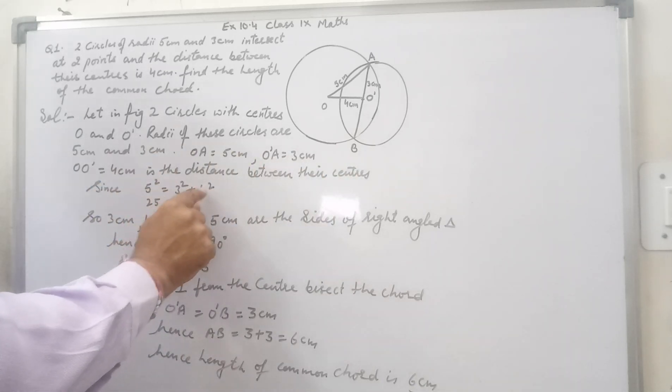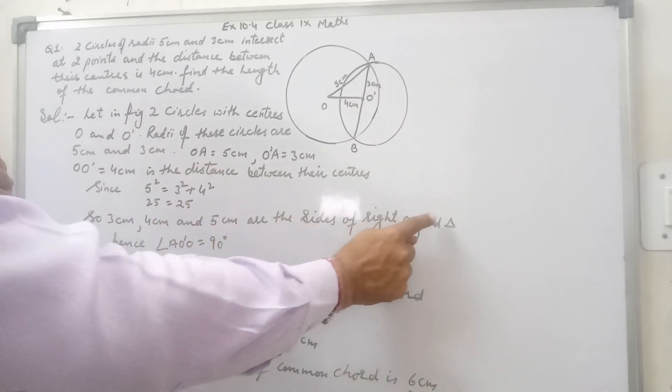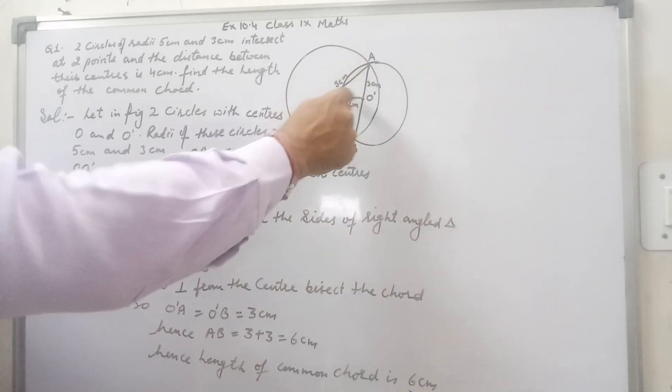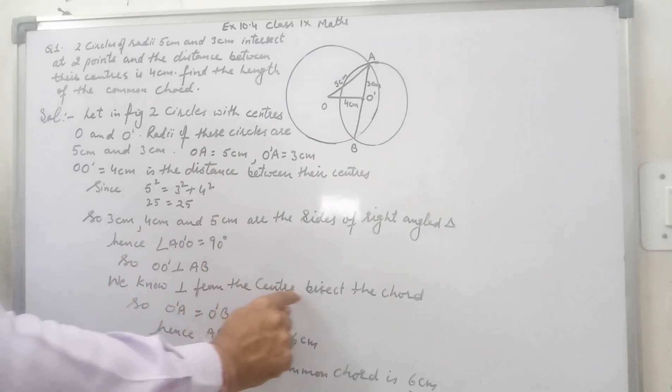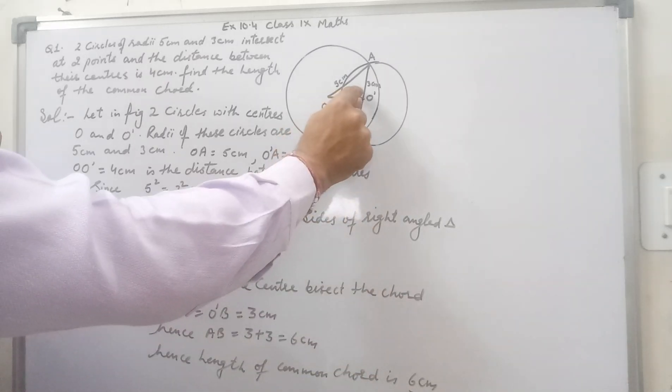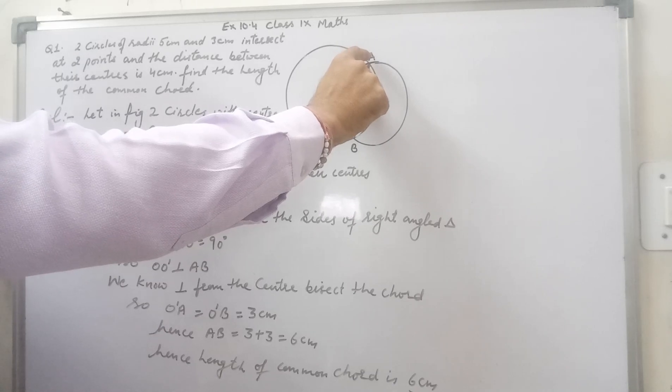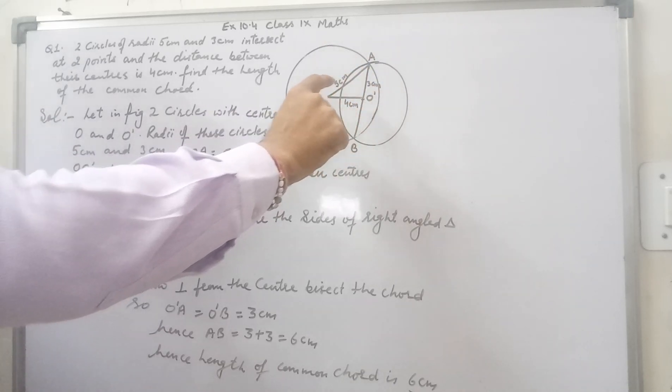Since 5 square is equal to 3 square plus 4 square that is 25 is equal to 25 hence 3, 4, 5 cm are the sides of the right angle triangle. You can say angle A O dash O is right angle. O O dash is perpendicular to AB. We know perpendicular from the center bisects the chord. If it is perpendicular then it will bisect this chord AB.